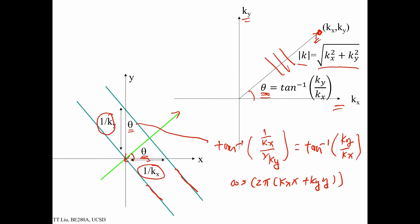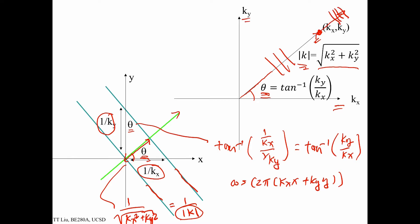The next thing we established is that the spacing — the period — is equal to 1 over the square root of kx squared plus ky squared, which is simply 1 over the magnitude of k. This tells us something interesting: the farther we get out into k-space, the smaller this spacing gets. So moving along a vector farther out in k-space corresponds to a much smaller spacing, meaning higher spatial frequency.